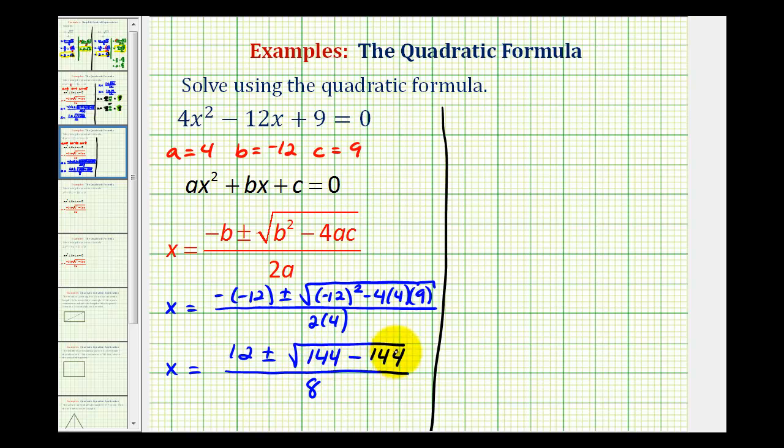Notice our discriminant here is going to be 0. So we'll have x = (12 ± √0)/8, which is actually just 0 divided by 8. So we have x = (12 ± 0)/8.